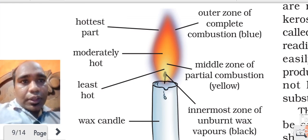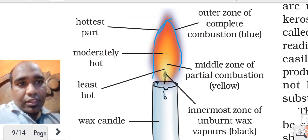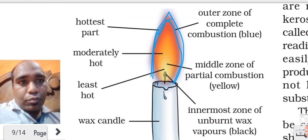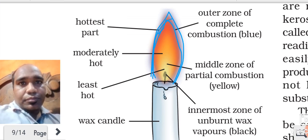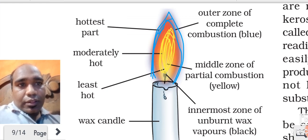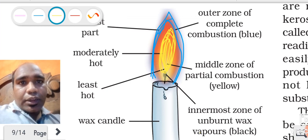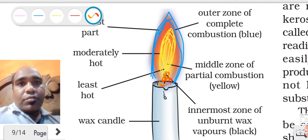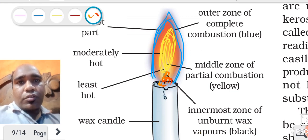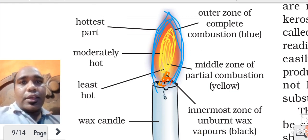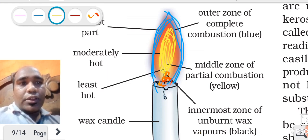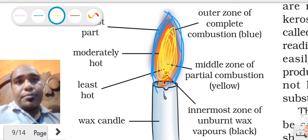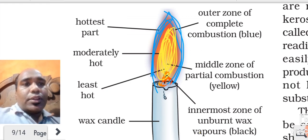If you observe carefully, the outer part is bluish in color - very thin but bluish. The middle part is yellow in color. And the most inner part is black in color. So it has three colors: outermost part is blue, the inner part is yellow, and the most inner part is black. Three zones: outer zone, middle zone, and innermost zone.